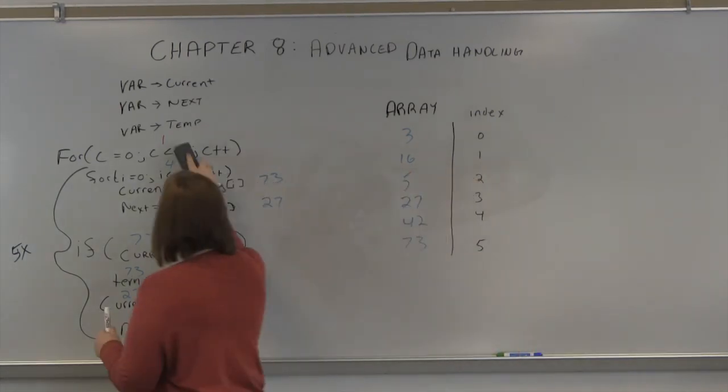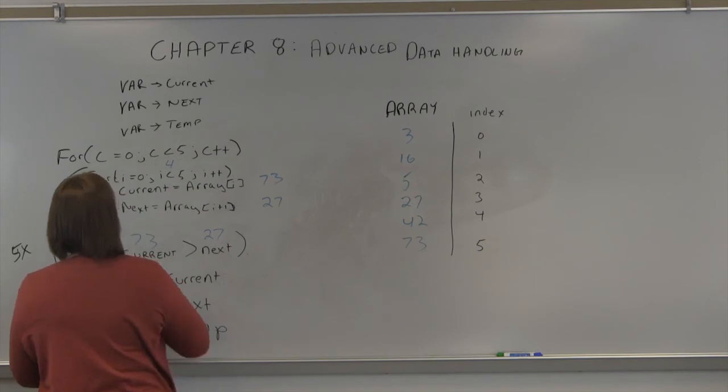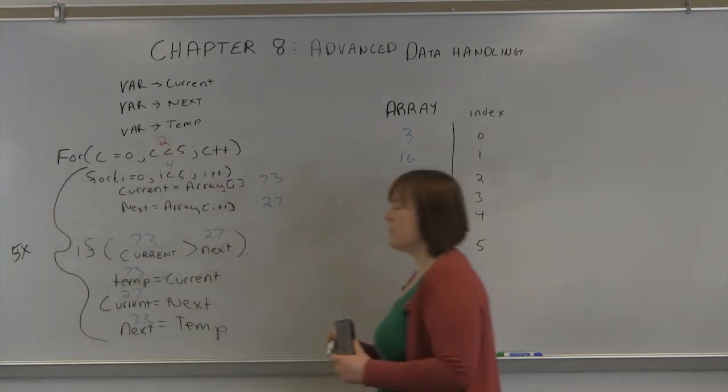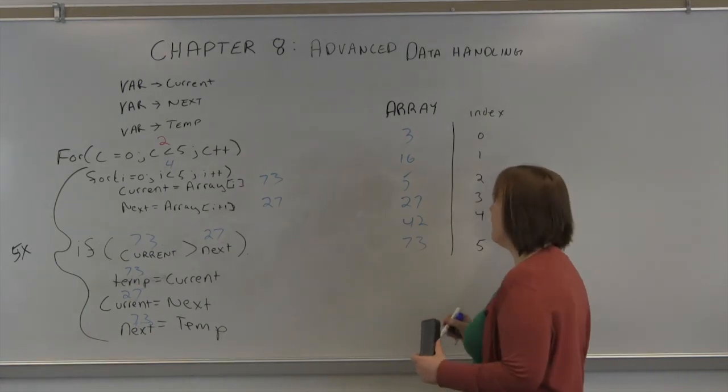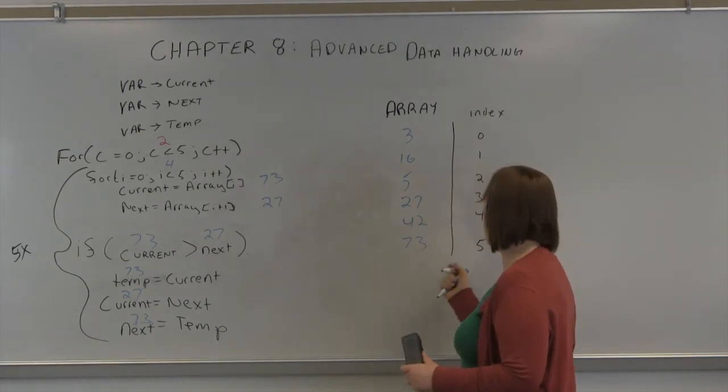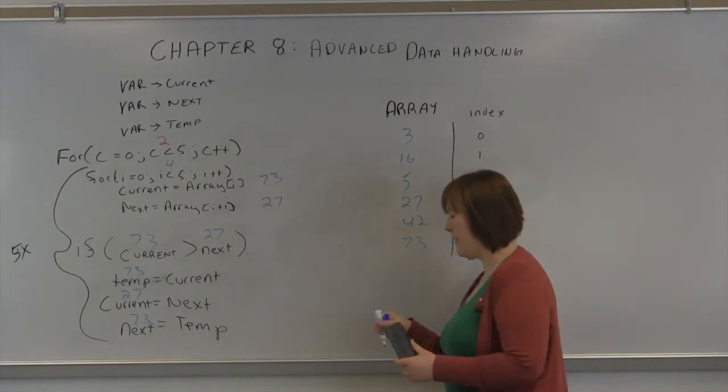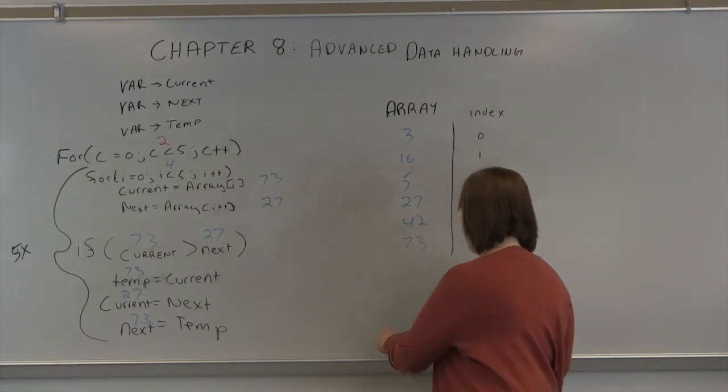So now we're on number 2. And we always assume, worst case scenario, that these are really out of order. That's why you go through it one less than the number of times in the array. That will ensure it's always in the right order. We might end up in the right order before that.